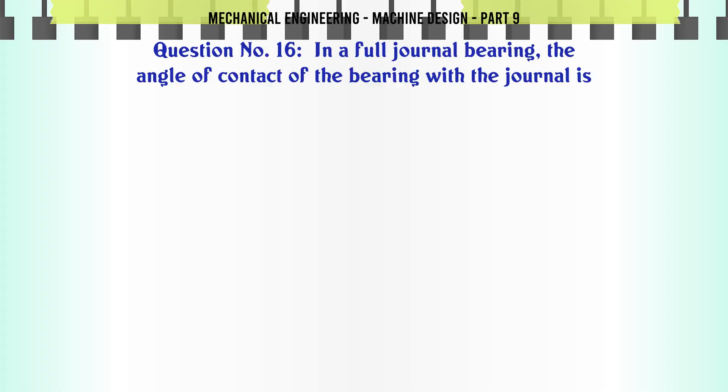In a full journal bearing, the angle of contact of the bearing with the journal is: A. 120°, B. 180°, C. 270°, D. 360°. The correct answer is 360°.